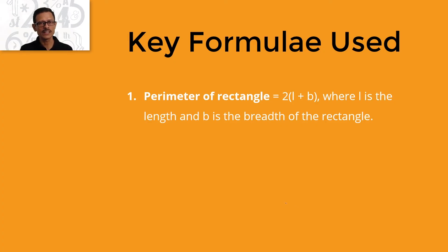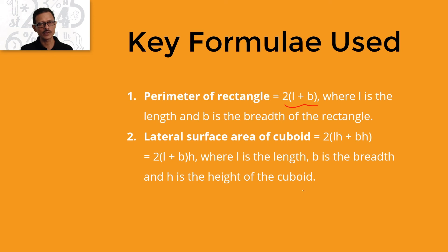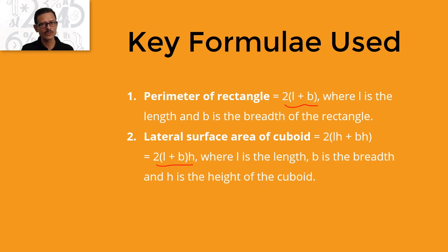Two key formulae used: one is the perimeter of a rectangle, which is 2(L + B), where L is the length and B is the breadth. The second is the lateral surface area of a rectangular cuboid, which is 2(LH + BH). Taking H common, it works out to 2(L + B) × H — in other words, the perimeter of the rectangular base multiplied by the height gives the area of the four walls or the lateral surface area of the cuboid.